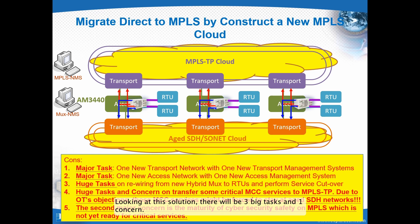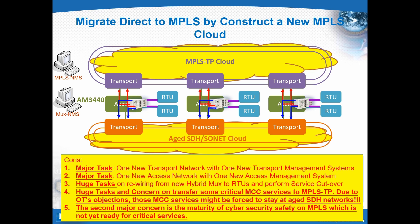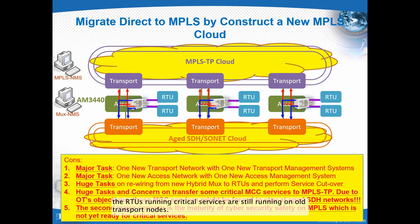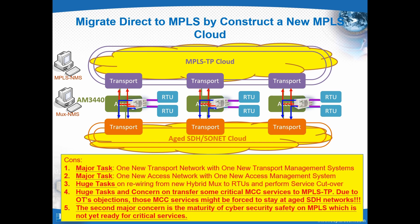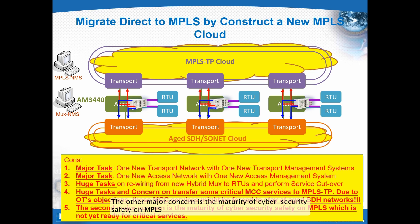Looking at the solution, there will be three big tasks and one concern. First, constructing a brand new MPLSTP cloud. Second, installing the new access MUX. Third, installing the new wiring. Even after these are done, as service migration starts between two clouds, the RTUs running critical services are still running on old transport nodes. There are concerns about direct service cutover to MPLSTP. There are several cases worldwide resulting in customers having to keep the old SDH Sonet cloud because services could not be migrated completely. Another major concern is the maturity of cybersecurity safety on MPLSTP, which is not yet ready for running critical services.